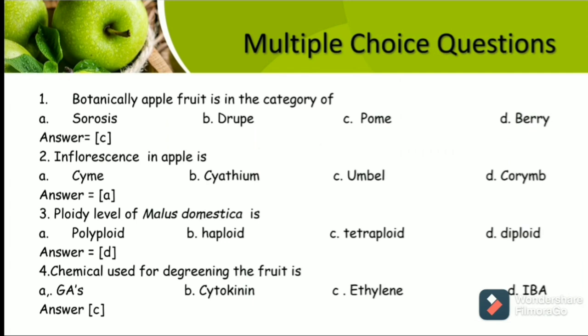Some questions relating to the production technology of apple: Question 1: Botanically, apple fruit is under the category of — options are Cirrhosis, Drupe, Pome, and Berry. The answer is Pome. Question 2: Inflorescence in apple is — options are Cyme, Cyathium, Umbel, and Corymb. The answer is Cyme. Question 3: Ploidy level of Malus domestica is — options are Polyploid, Haploid, Tetraploid, and Diploid. The answer is Diploid. Question 4: The chemical used for degreening the fruit is — options are Gibberellic acid, Cytokinins, Ethylene, or Indolebutyric acid. The answer is Ethylene.